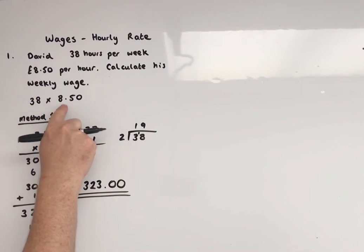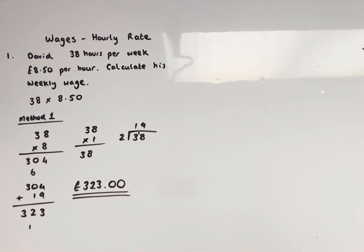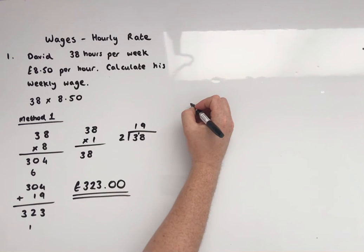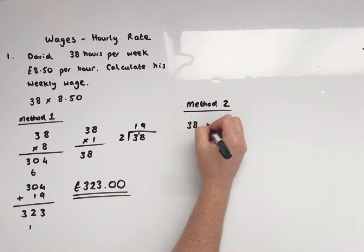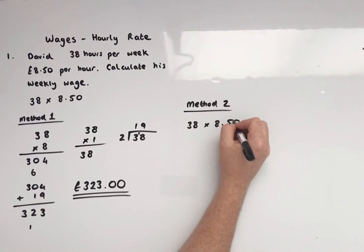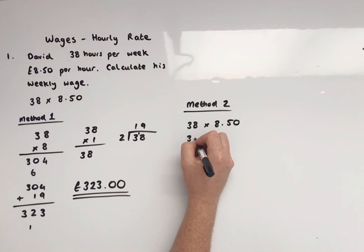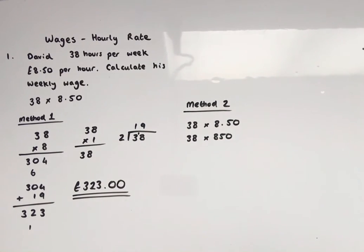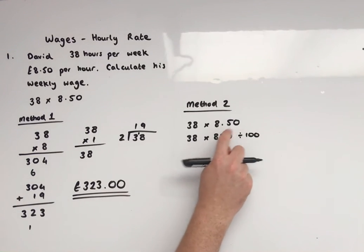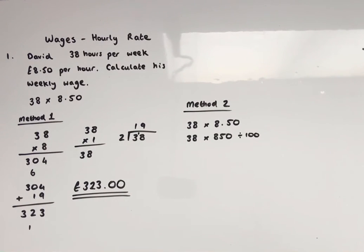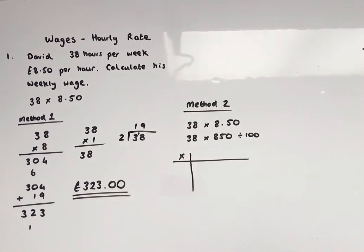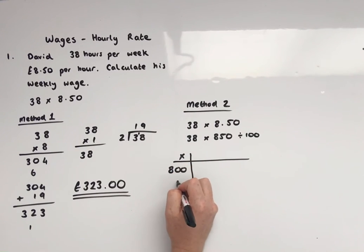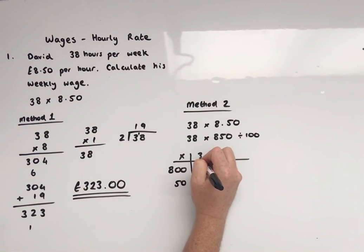Okay, looking at it as 8 pounds and 50 pence. Let's look at the calculations involved there. Okay, so method two. Because we are multiplying 38 by 8.50, we can consider that as 38 multiplying 850 and then dividing by 100. Okay, so pounds is going into pence and then we're converting it back into pounds at the end. Okay, so area modelling, area multiplication.